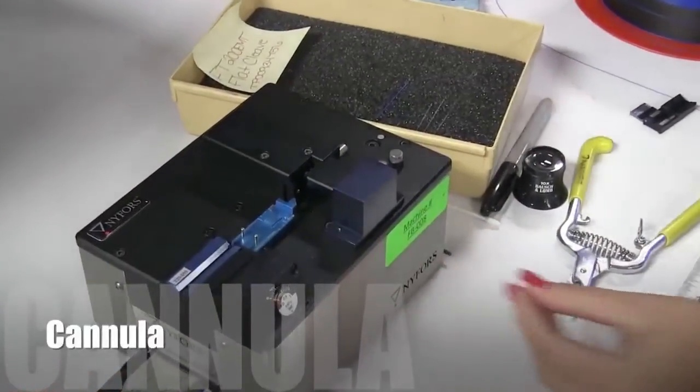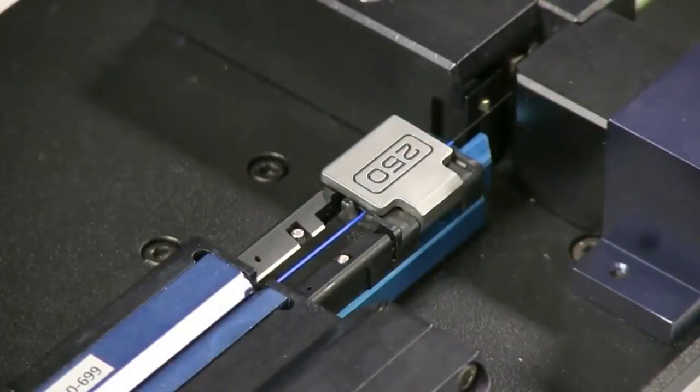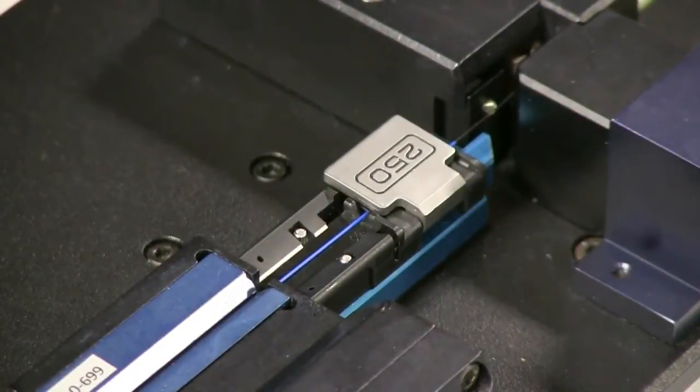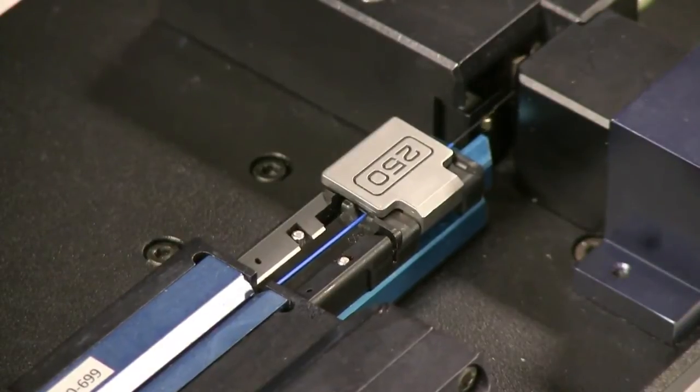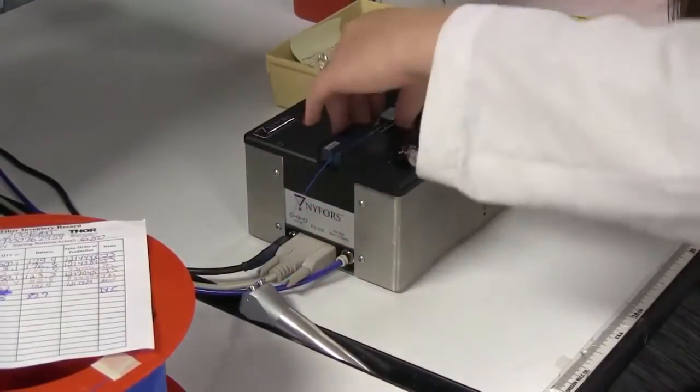Thorlabs' line of optogenetics equipment is also manufactured in our fiber department. Our computer-driven multi-mode fiber cleaver produces consistent, precise cleaves, making it ideal for use in cannula production. This cleaver is also used in the production of patch cables that have one cleaved end.